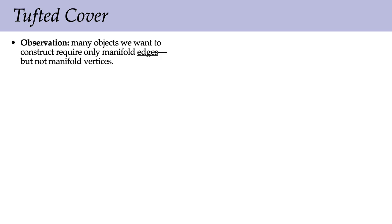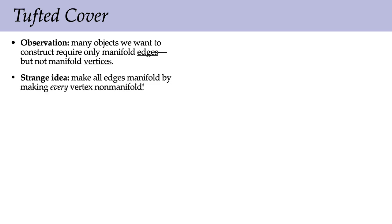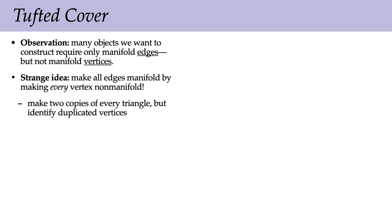The key observation is that many of the objects and algorithms we care about in geometry processing actually just need manifold edges, and they don't mind if there are non-manifold vertices in the mesh. So our somewhat strange idea is to make all of the edges of the mesh manifold by making every single vertex non-manifold. In particular, what we're going to do is make two copies of every triangle, but glue back together the duplicated vertices, and then glue these duplicated triangles together in a nice edge-manifold way.